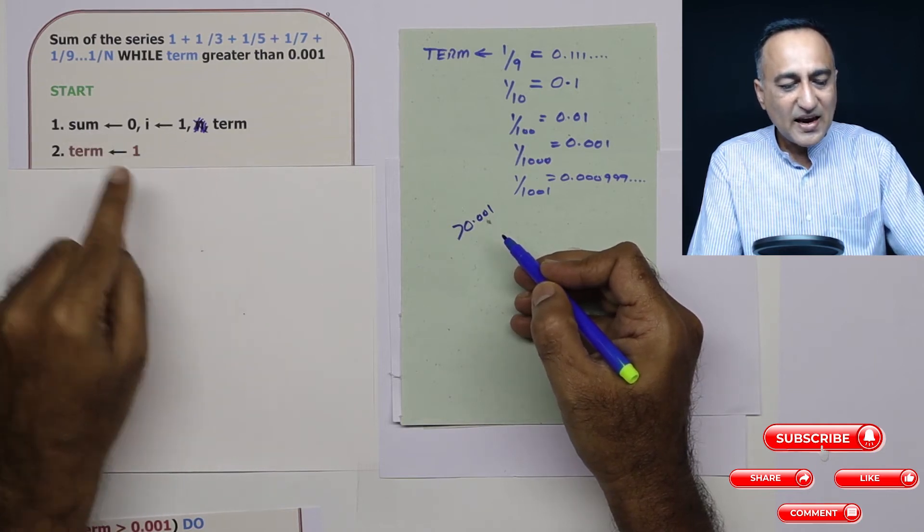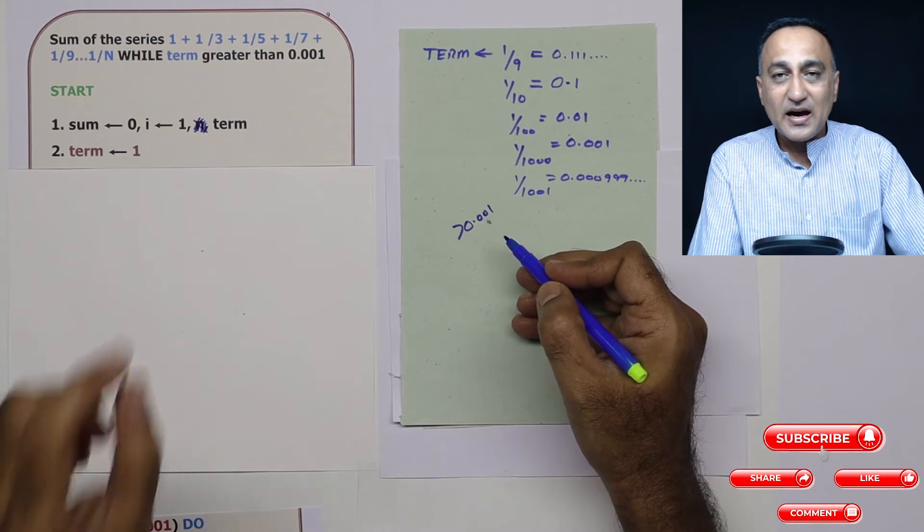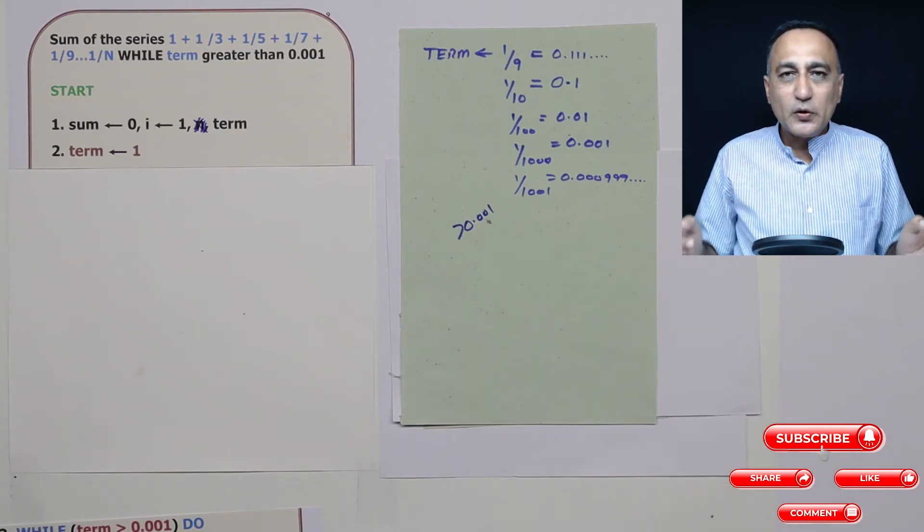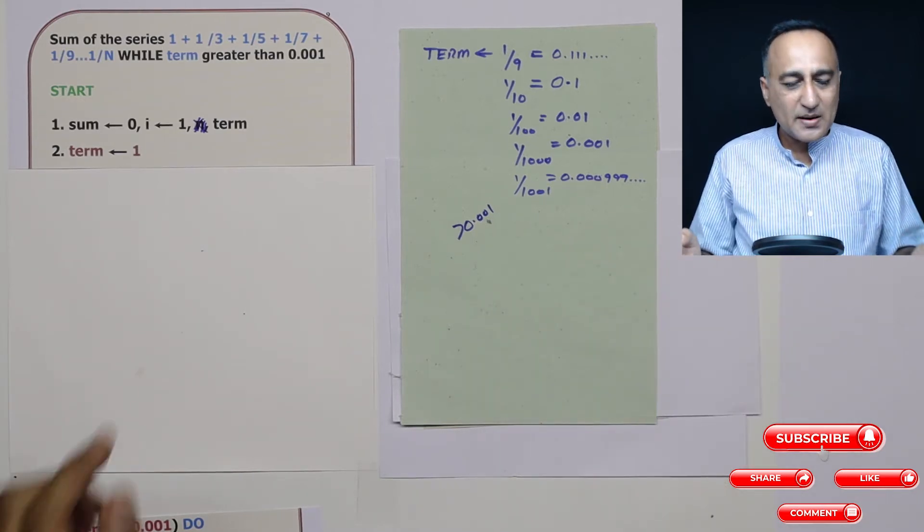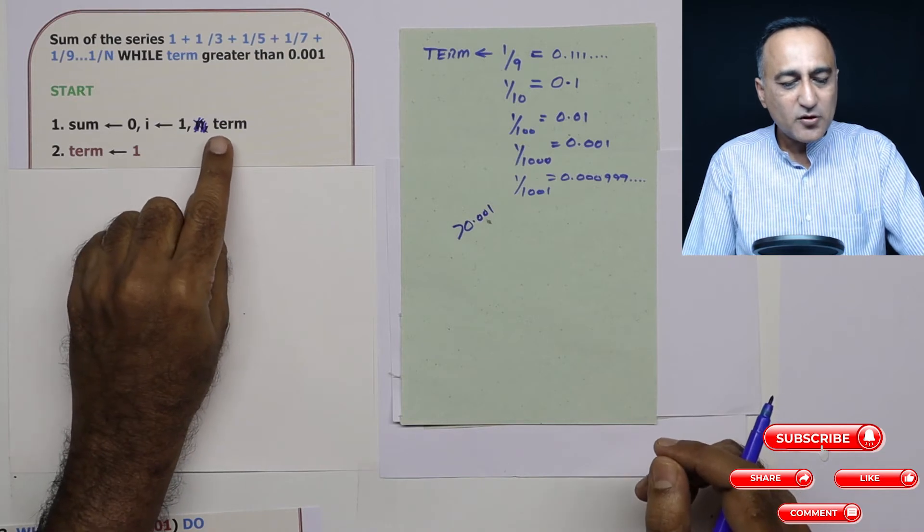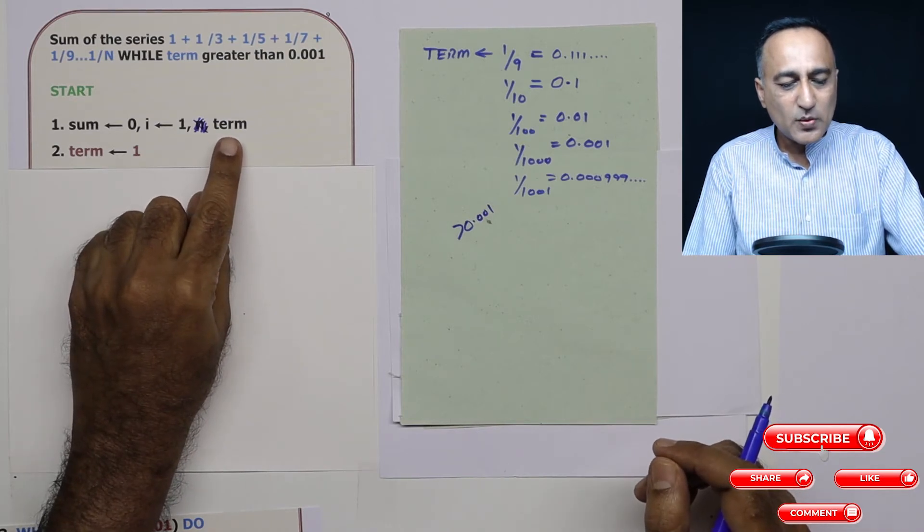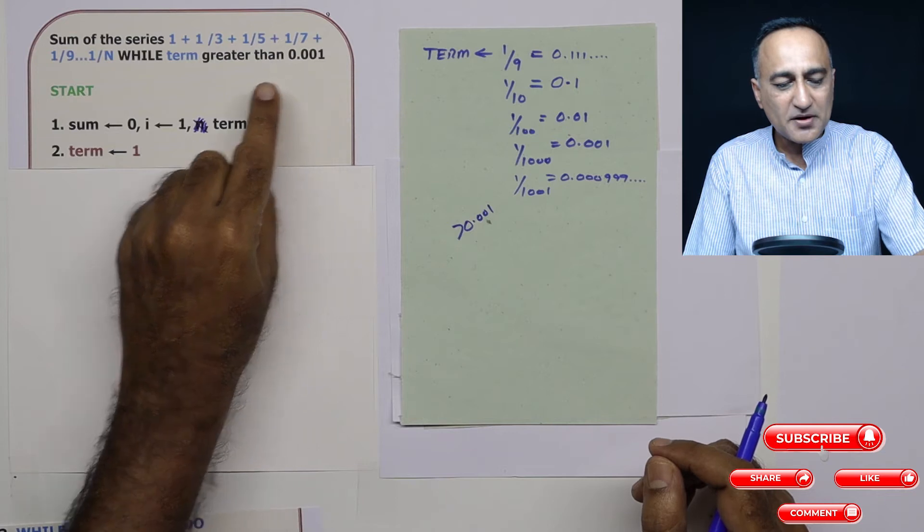The reason I have cancelled out the variable n is I am not asking the user to enter the end value n. I am just trying to tell him that you should continue to add as long as the value of term is greater than 0.001.